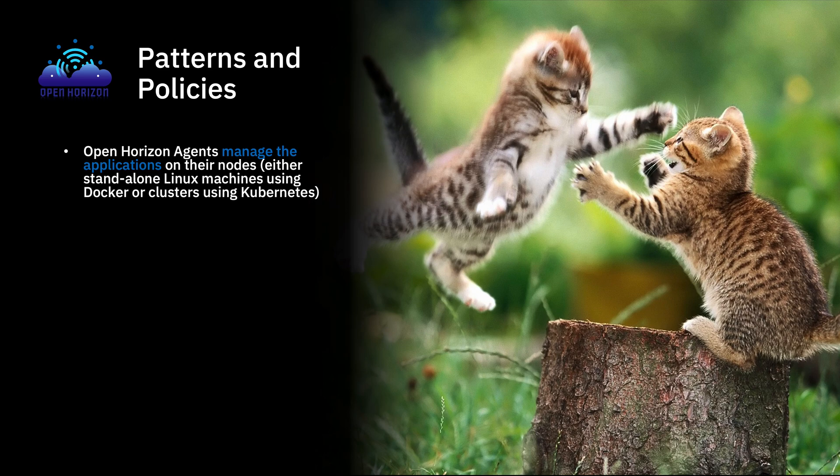Open Horizon agents manage the applications on their nodes, and those nodes can either be standalone Linux machines using Docker or clusters of machines using Kubernetes. And there are two ways that they manage their applications.